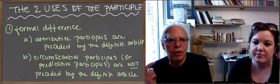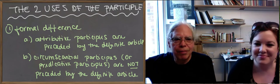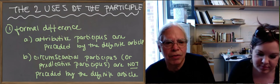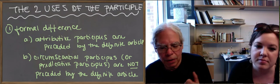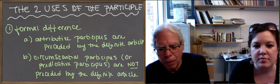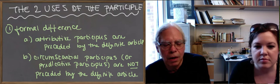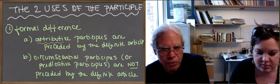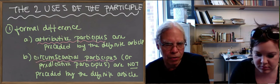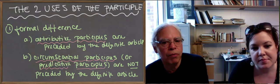The book says — and it's right — that there are two kinds of participles. We're going to learn a third kind later, but basically there are two kinds. The last kind is really just a subset of the second. Remembering that participles are adjectives, what distinguishes between the way the two kinds work is very straightforward. There are attributive participles and circumstantial participles. You might want to think of the circumstantial participles as predicative participles, because the difference is that attributive participles have an article before them.